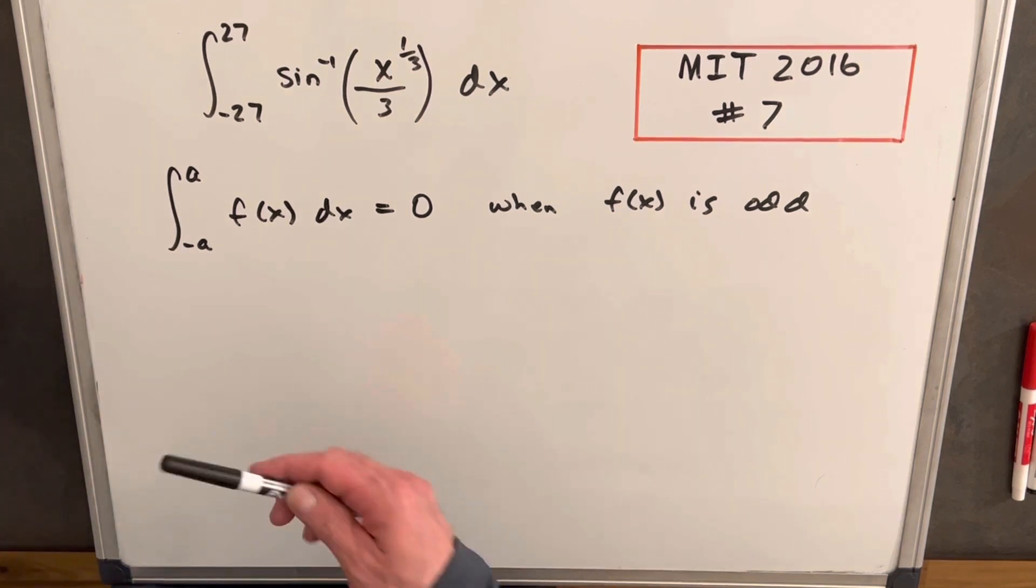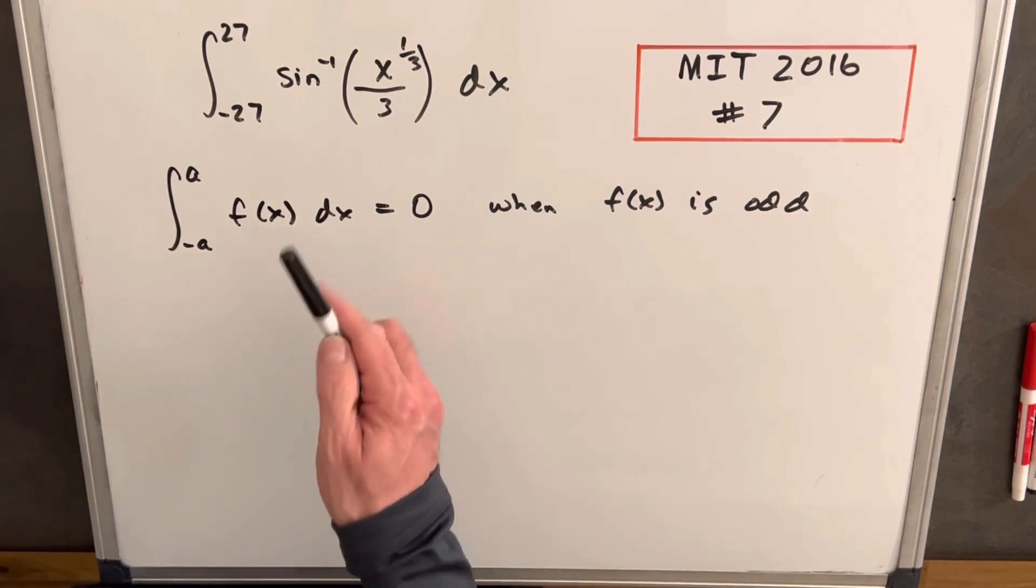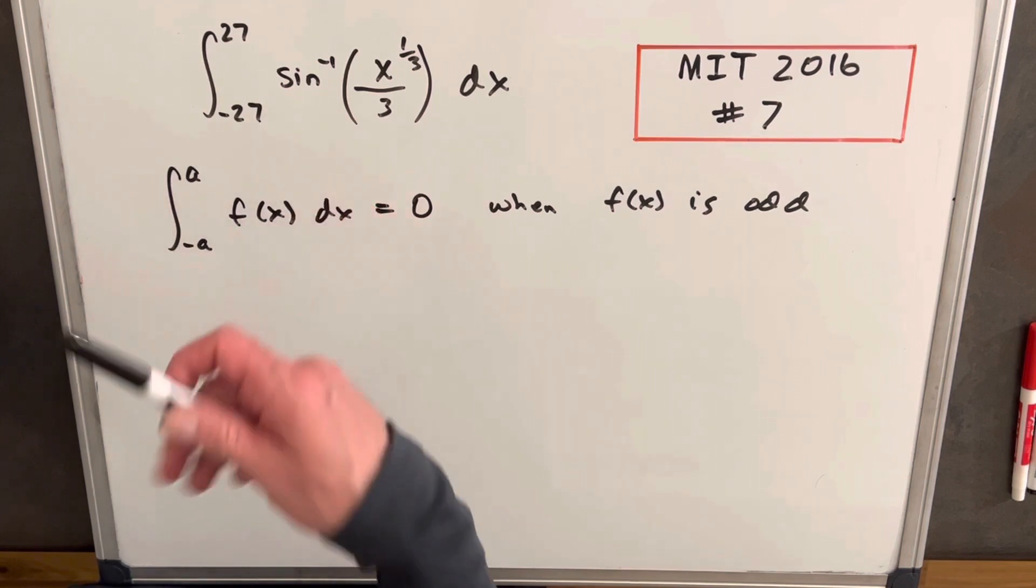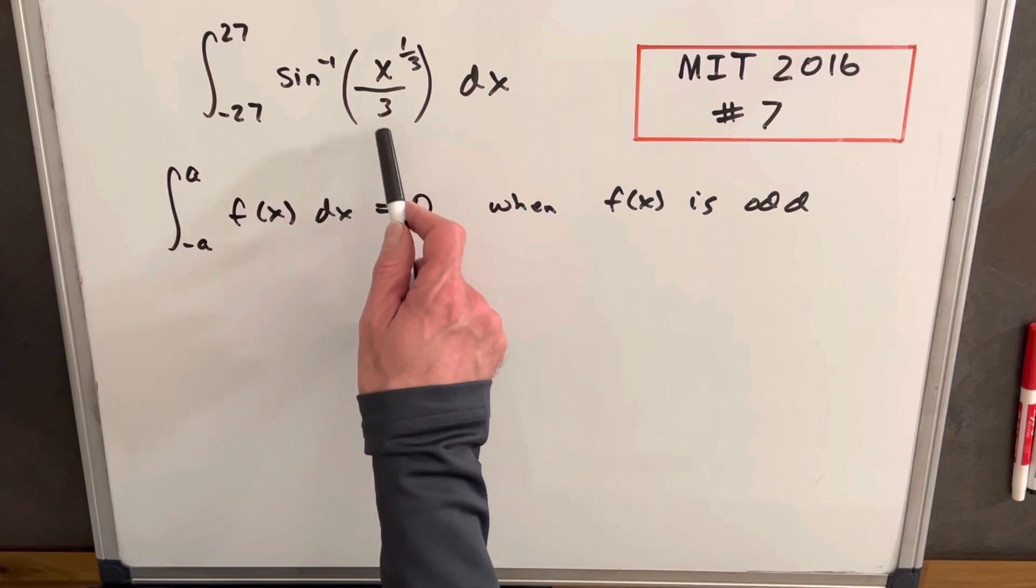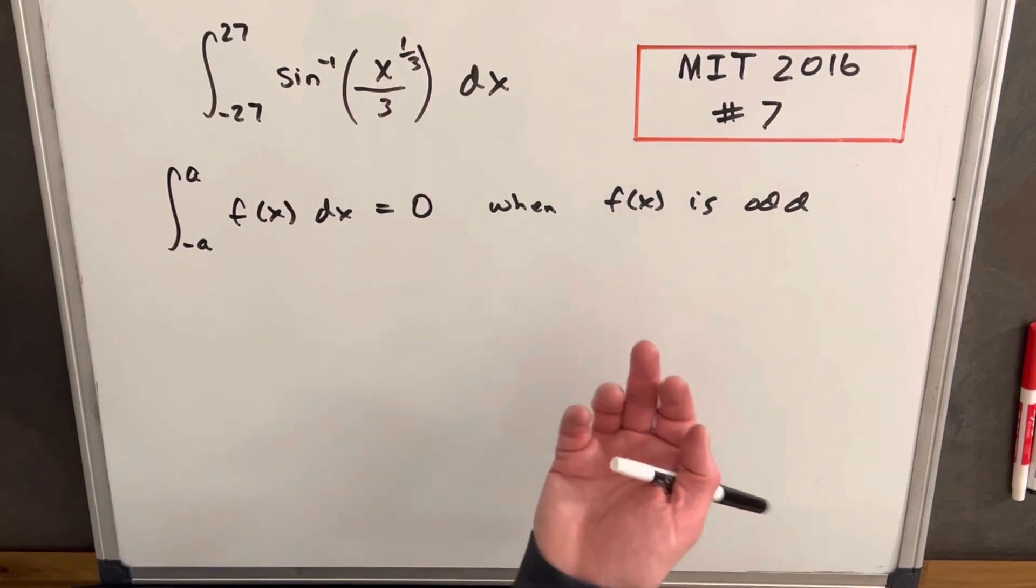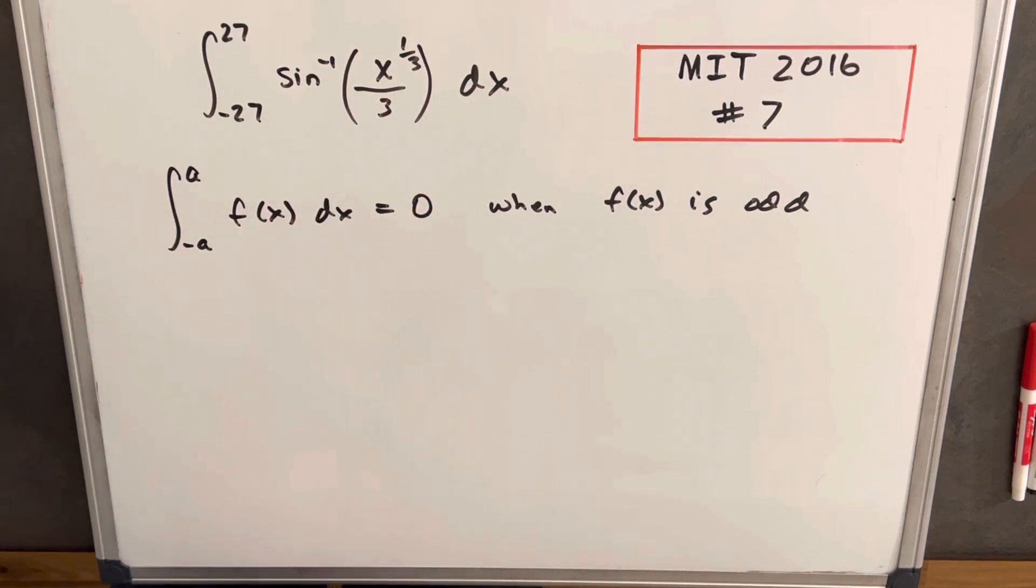And the other thing to know, we know that sine is an odd function, but what happens is the inverse of an odd function is also an odd function. And so we have the composition of an odd function with an odd function, which is itself an odd function, and hence zero.